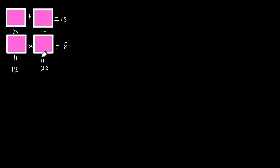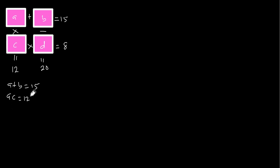Now let's get started. First of all I'm going to name this box as box A, this one as box B, this one as box C, and lastly this box as box D. So from these two boxes we have A plus B is equal to 15, from these two we have AC is equal to 12, from these ones we have CD is equal to 8, and lastly from these ones we have B minus D is equal to 20.